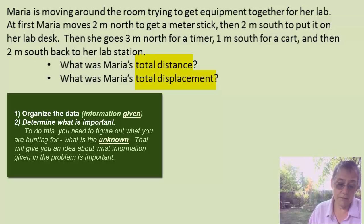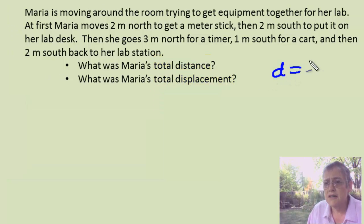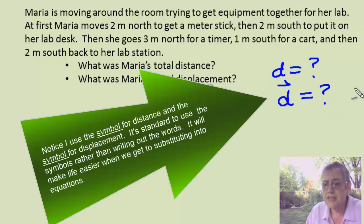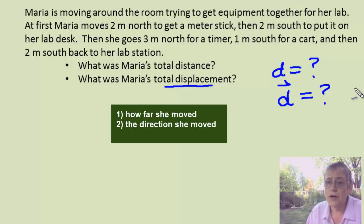So we're hunting for the total distance. So distance is equal to what? It's our first unknown. The second unknown is the total displacement. Displacement is a vector. So I'm going to put an arrow over it to indicate I'm hunting for a vector. And that's my unknown. So I'm looking for information involving distance and displacement. So I'm hunting for how far she moved and in what direction she moved.